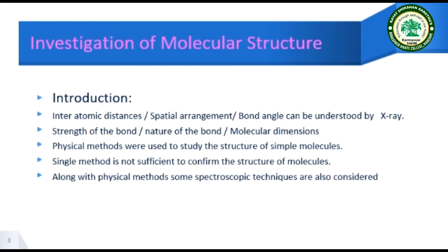The second aspect is the strength of the bond — whether the bond is stronger or weaker. The nature of the bond means whether the bond is covalent, polar, ionic, or partially polar. Similarly, molecular dimensions — meaning the size of the molecule, how small or how large — can be understood from the molecular structure.